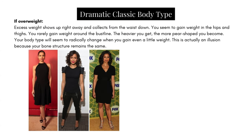If overweight, excess weight shows up right away and collects from the waist down. The Dramatic Classic seems to gain weight in the hips and thighs and rarely gains weight around the bust line. The heavier this type gets, the more pear-shaped they become. The Dramatic Classic body type will seem to radically change when they gain even a little bit of weight.